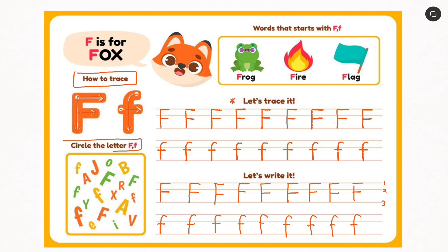Now let's look at how to circle the alphabet F. So now we've learned how to trace the alphabet F and write it ourselves. Let's identify the alphabet F among the letters over here. We have one small f over here, another one here, then another one here, then another one here, we have another one here, one capital F here, another one here, another one here. Very good. That is all for the Fs that we need to circle.